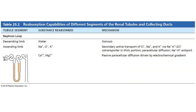Looking at the loop of Henle — what we just covered in this video — in the descending limb, water is reabsorbed passively. Then in the ascending limb, we spend energy to actively transport salt, and that enhances the passive reabsorption of water.